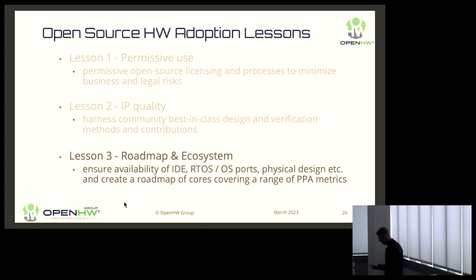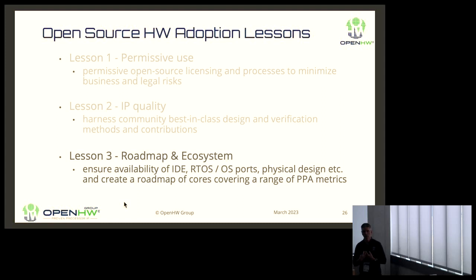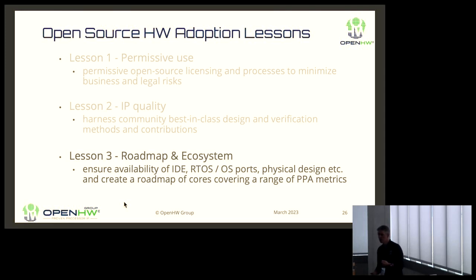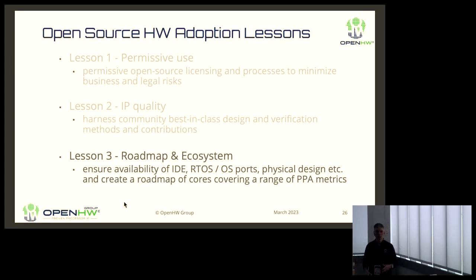We need permissively licensed IP so the legal team feels it's safe. We need a verification infrastructure that replicates what a processor company would do on their own. For real critical mass and adoption, there needs to be an ecosystem — not just one core. There needs to be a roadmap with lots of cores, all the software support you'd expect, and real meaningful SOC implementations you can look at and maybe take for a test drive.